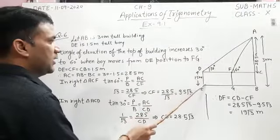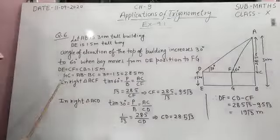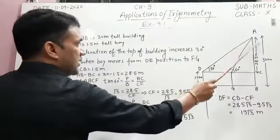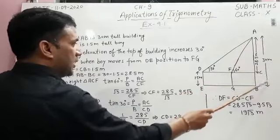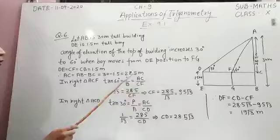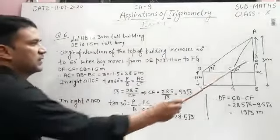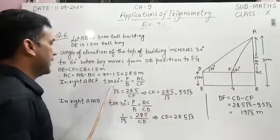Here, DE is equal to FG is equal to CV, that is 1.5 meters, and AC is equal to AB minus BC, that is 30 minus 1.5, 28.5 meters. In right triangle ACF,